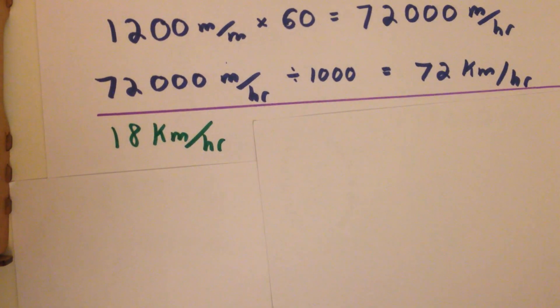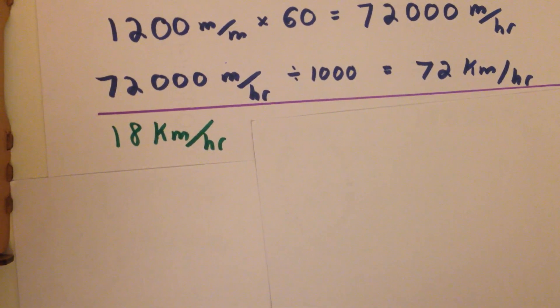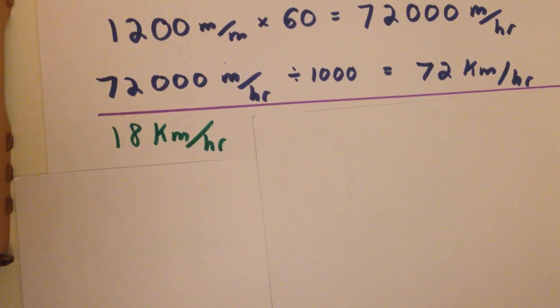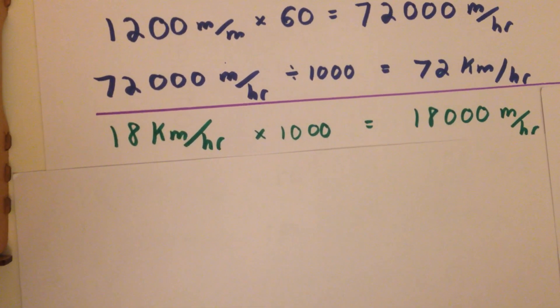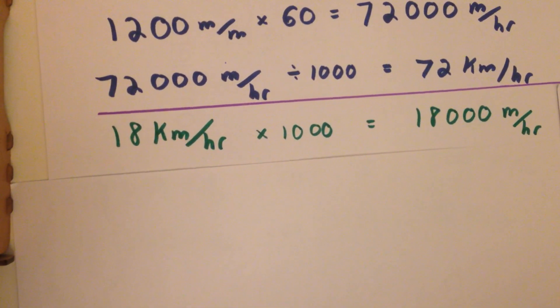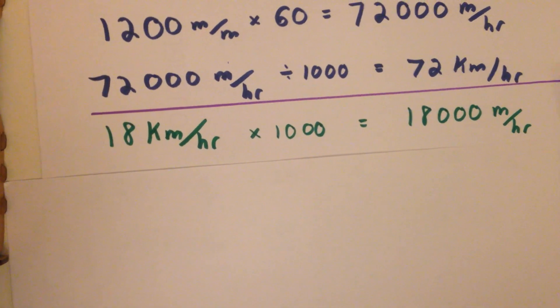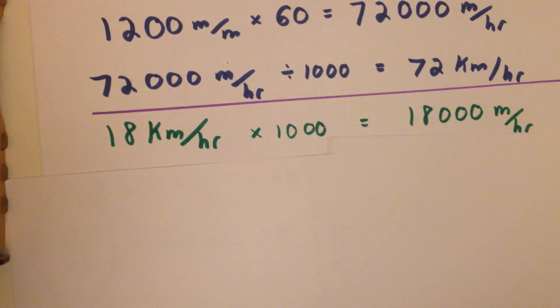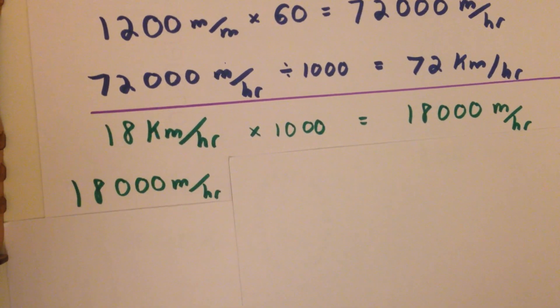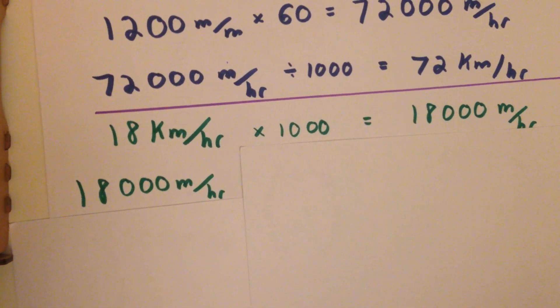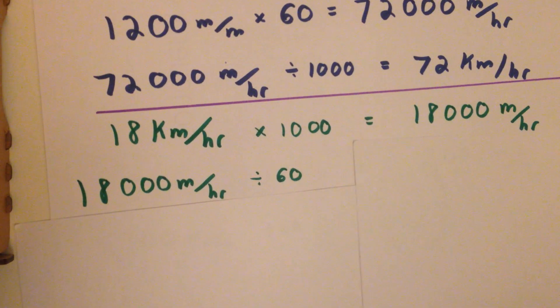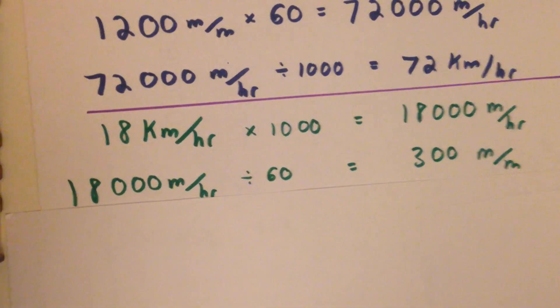18 kilometers an hour, that's a chicken, a pig, or a squirrel. So, first thing we're going to do here is times by 1,000, and we've got 18,000 meters per hour. We're now going to try and get that into meters per minute. Undoing it, we're going to divide by 60, because there's 60 minutes in an hour, and we get 300 meters per minute.